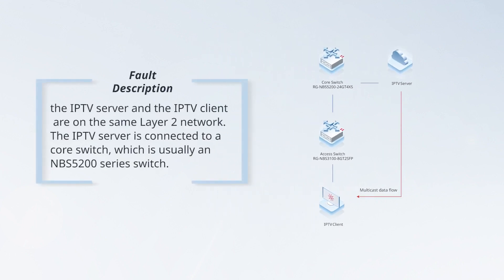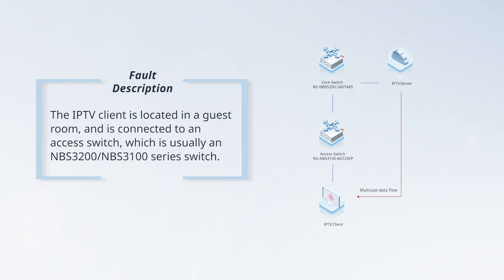As shown in the topology, the IPTV server and the IPTV client are on the same Layer 2 network. The IPTV server is connected to a core switch, which is usually an NBS 5200 series switch. The IPTV client is located in a guest room and is connected to an access switch, which is usually an NBS 3200 or NBS 3100 series switch.